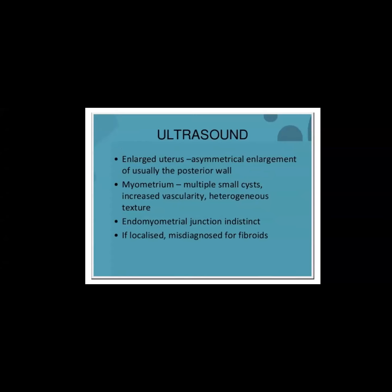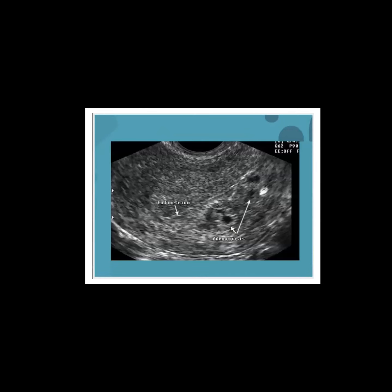For diagnosis, we use transvaginal ultrasound and MRI. On ultrasound, the uterus is enlarged with asymmetrical enlargement — usually the posterior wall. Within the myometrium, there are multiple small cysts giving a honeycomb appearance.